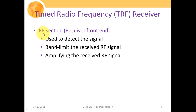The RF section is basically used to detect the signal. At the very first stage, we have an antenna whose responsibility is to convert RF radiation into its electrical counterpart, so that we can further process it in the electrical domain. Then we must band-limit the received RF signal — since the environment is full of multiple frequency signals, we must select a specific range of frequencies we want to demodulate, then amplify the received RF signal to drive further electrical circuitry.